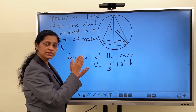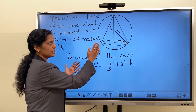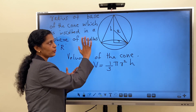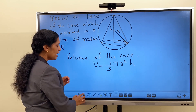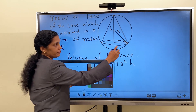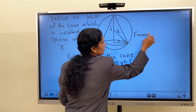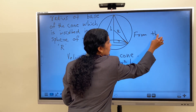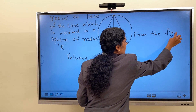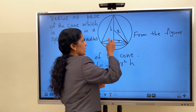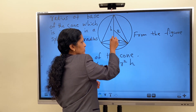We have to replace either r or h using the idea that our cone is inscribed in the sphere. And from the figure, you can see this portion here — we are marking points A, B, C — giving us a right angle triangle ABC.